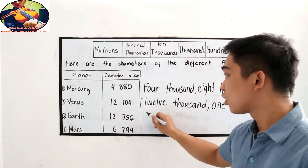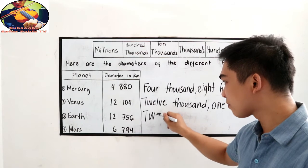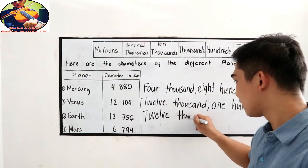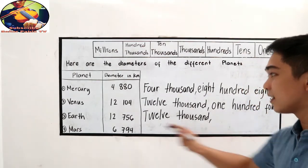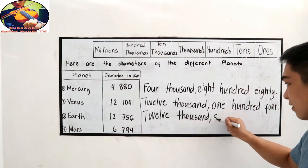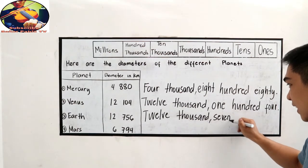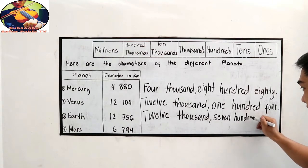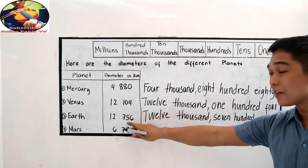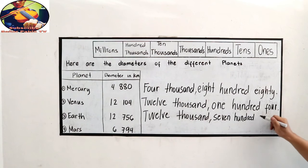So that is twelve thousand. Then, of course, comma, seven hundred fifty-six. Then don't forget your hyphen, then six, fifty-six.